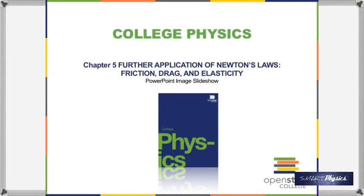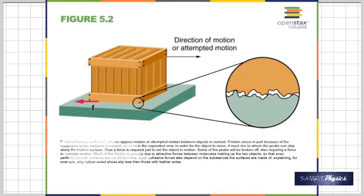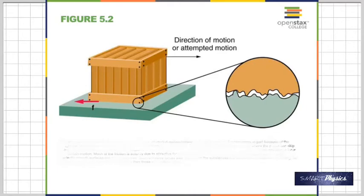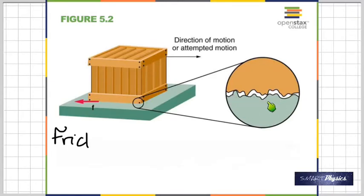This is chapter five, Applications of Newton's Laws. We're looking at three important things: friction, drag, and elasticity. What you see there is two surfaces touching each other. If you look at the two surfaces through a microscope, they may appear smooth to the naked eye, but through a microscope you can see how rough they really are. That roughness is the reason for friction.